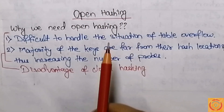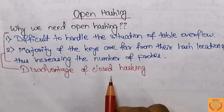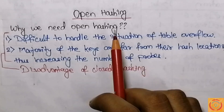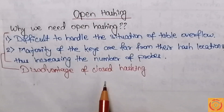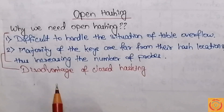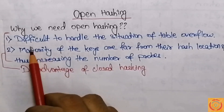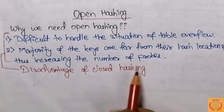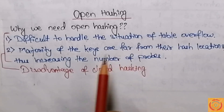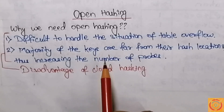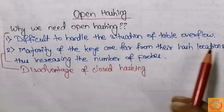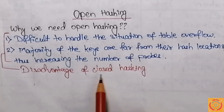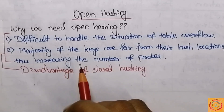Before starting with the open hashing method, let's know why we need open hashing — that means what are the disadvantages of closed hashing due to which we had to introduce this new method. In closed hashing, the main disadvantage is that it was difficult to handle the situation of table overflow, that means when the number of key values to be mapped is greater than the size of the table. In that case we were unable to map the key values in any location.